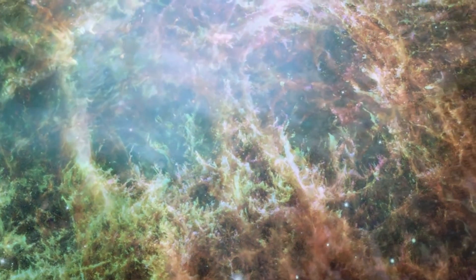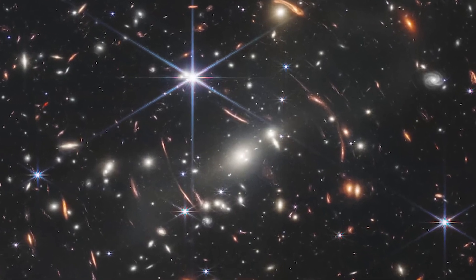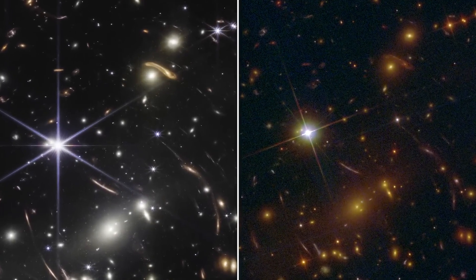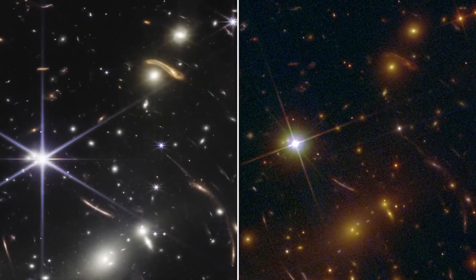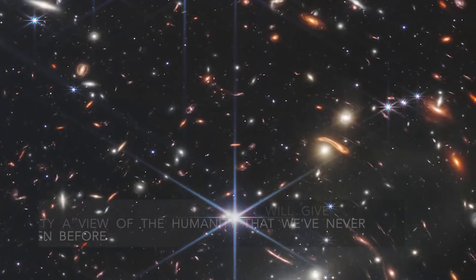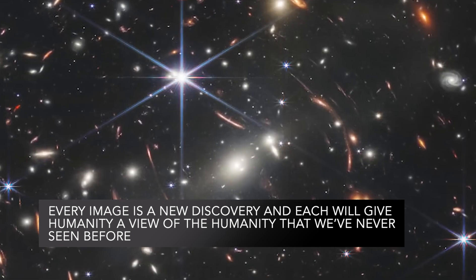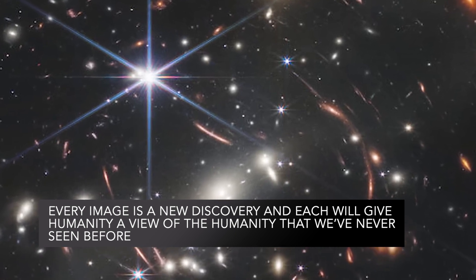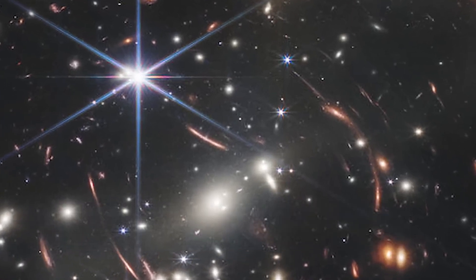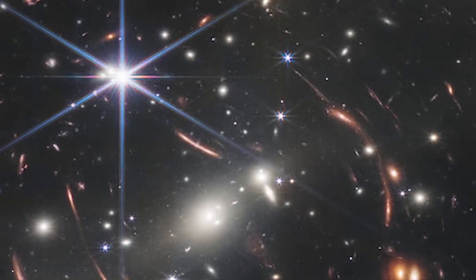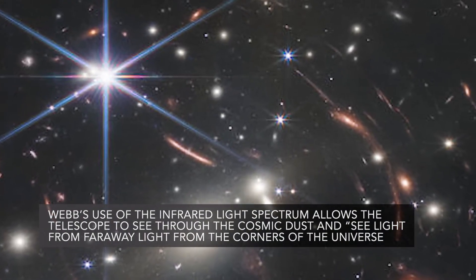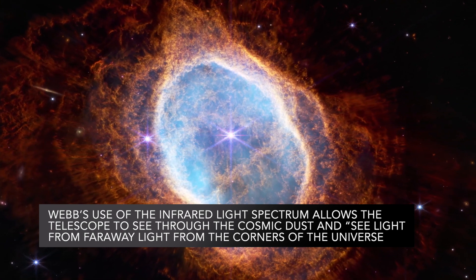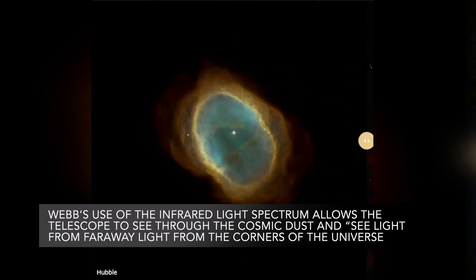With one exception, the latest images showed parts of the universe seen by other telescopes, but Webb's sheer power, distant location off-Earth, and use of the infrared light spectrum showed them in a new light. Every image is a new discovery, and each will give humanity a view of the humanity that we've never seen before, NASA Administrator Bill Nelson said, speaking enthusiastically about the images showing the formation of stars and devouring black holes. Webb's use of the infrared light spectrum allows the telescope to see through the cosmic dust and see the light from far away corners of the universe.